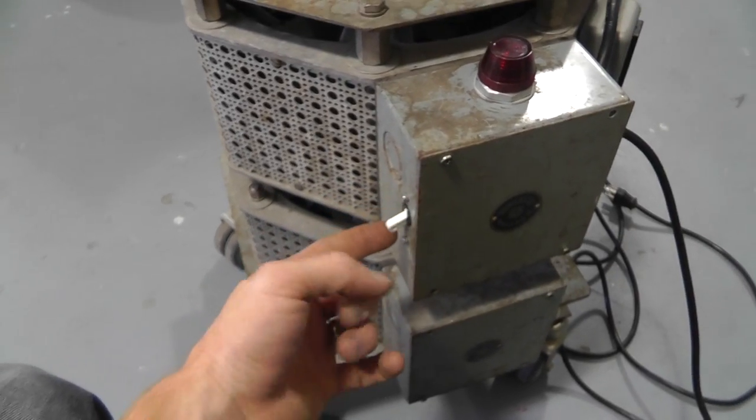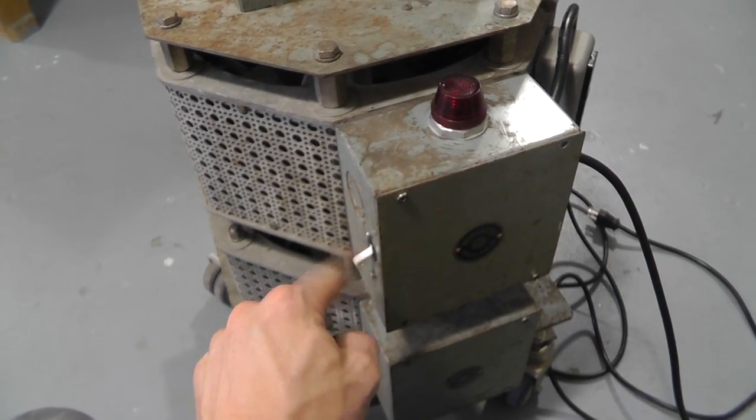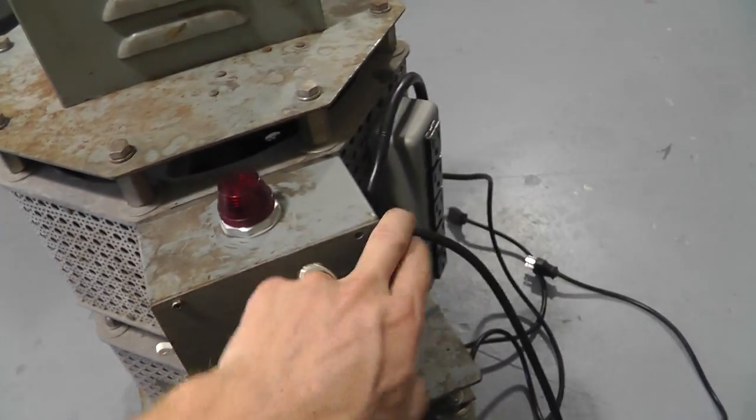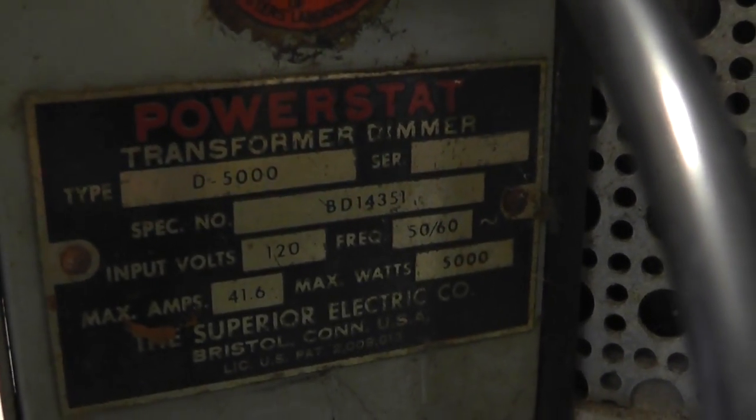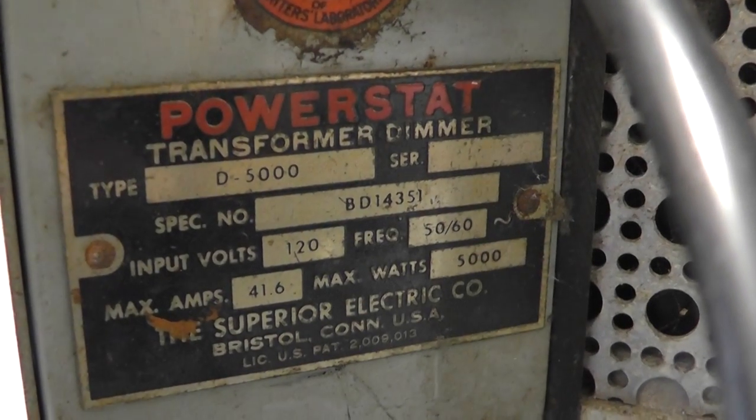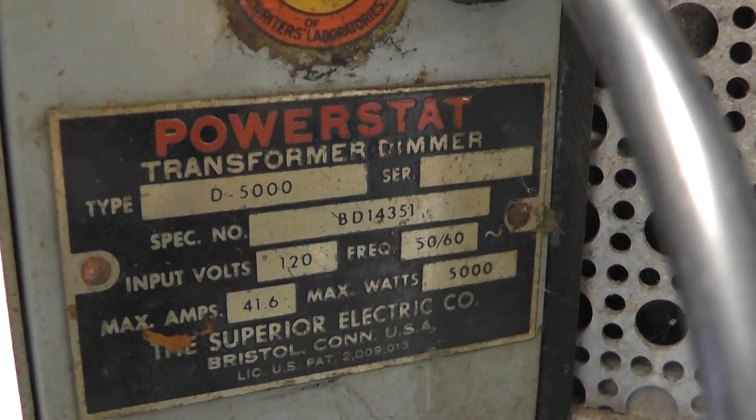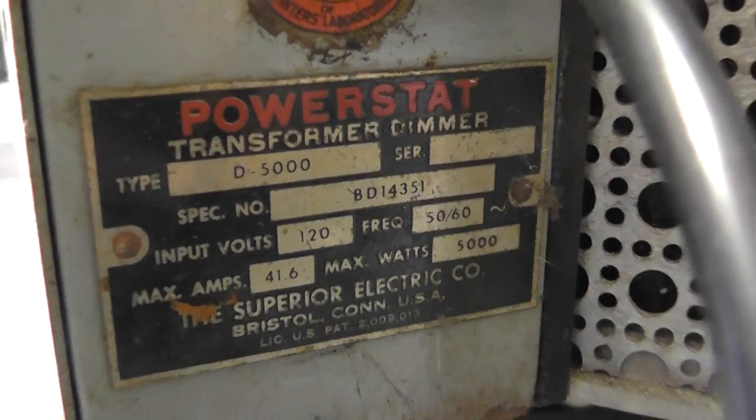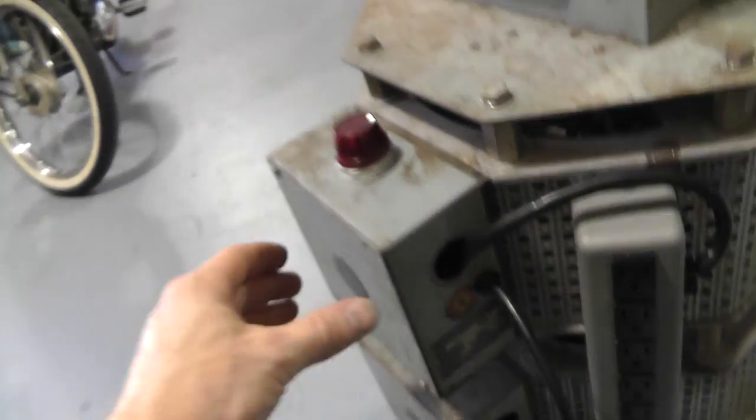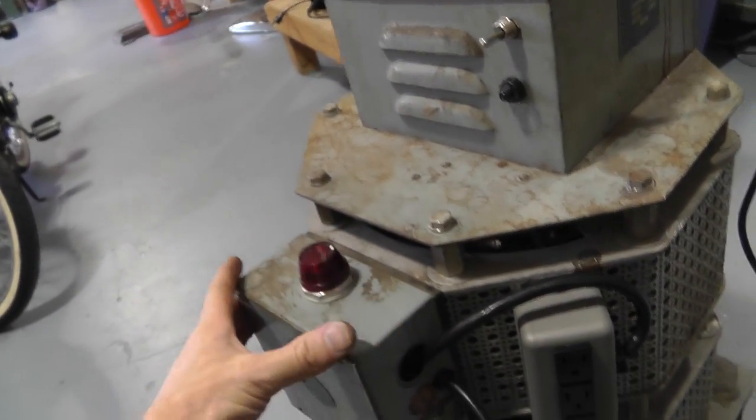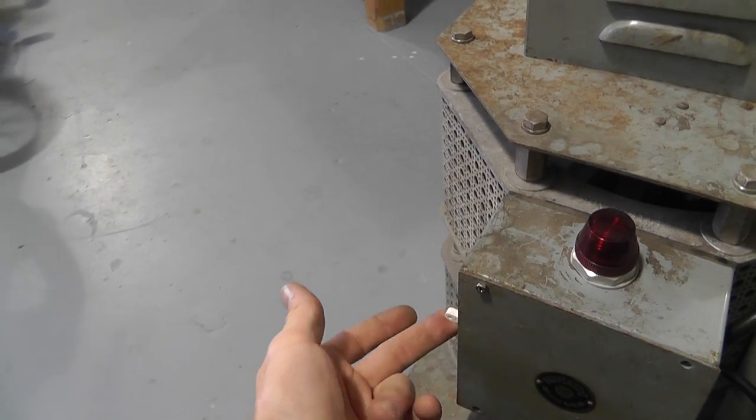Then I put a breaker in here. This is a 25 amp breaker. Now the interesting thing about this VARIAC is it is a 5,000 watt VARIAC. So it says it can put out 41.6 amps. It's quite a lot. So this is just a power indicator.